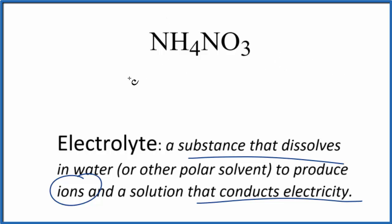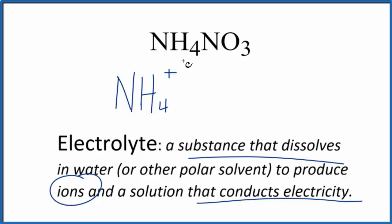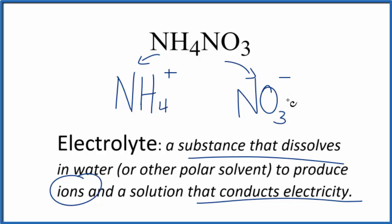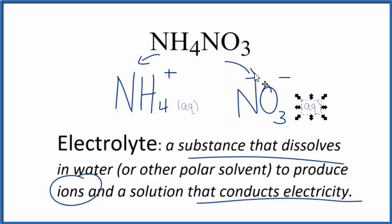For NH4, we get NH4+ — you need to memorize that NH4 is the ammonium ion with a positive charge. For the nitrate, that's NO3-, and you need to memorize NO3- as well; both are very common ions in chemistry. Since they dissolved in the water, we put a little AQ after them. So these are the ions we get when NH4NO3 is put in water.